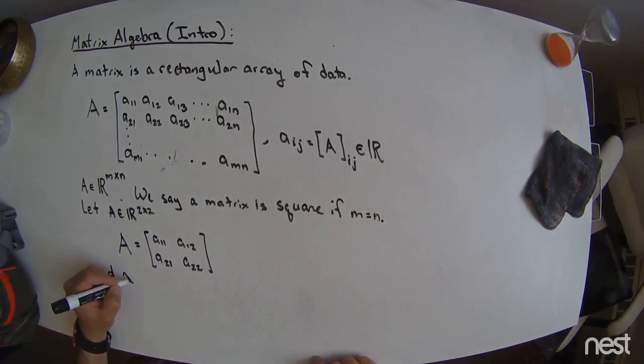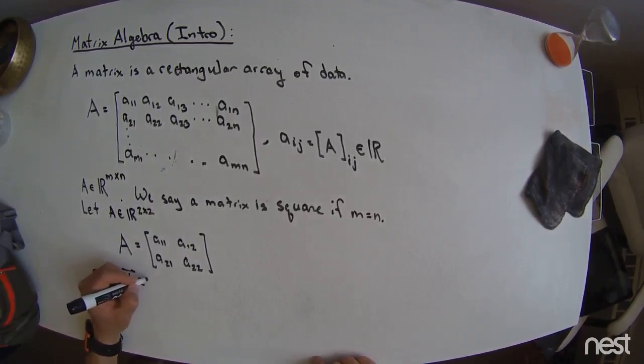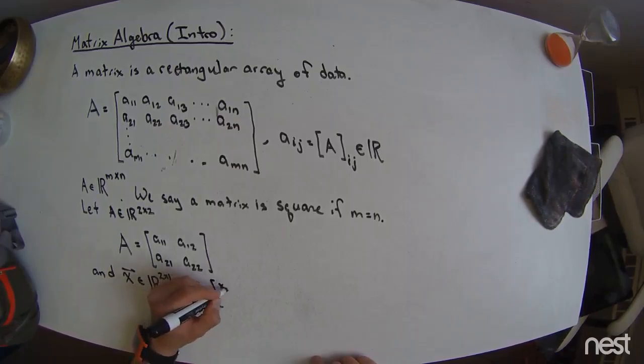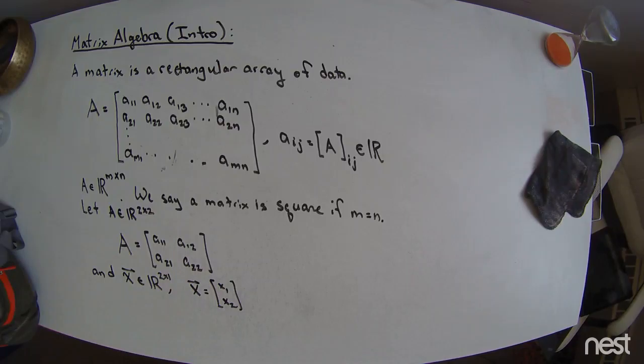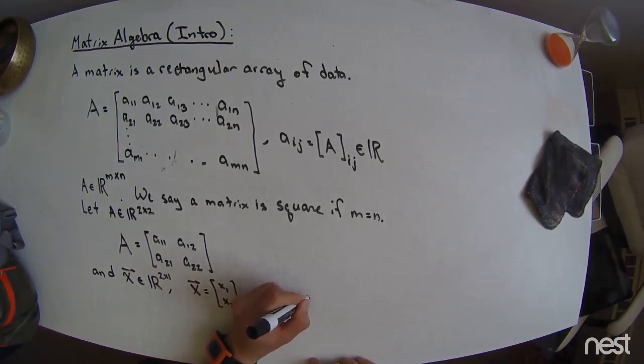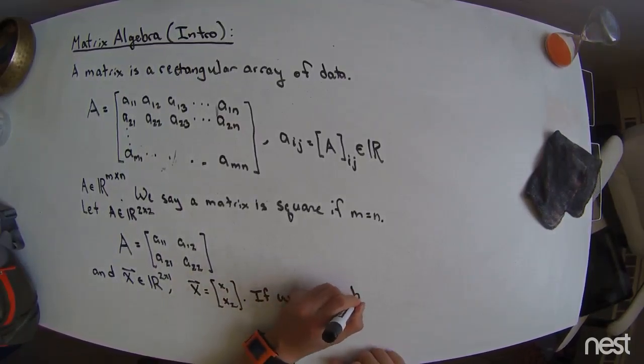And so this is a 2 by 2 matrix, and what we're going to see here is that X is a vector, and that vector is an R 2 by 1. So that means that X looks like X1, X2. Two rows, one column. And so we see that vectors are a special case of matrices. These are the two quantities that we're really going to need.